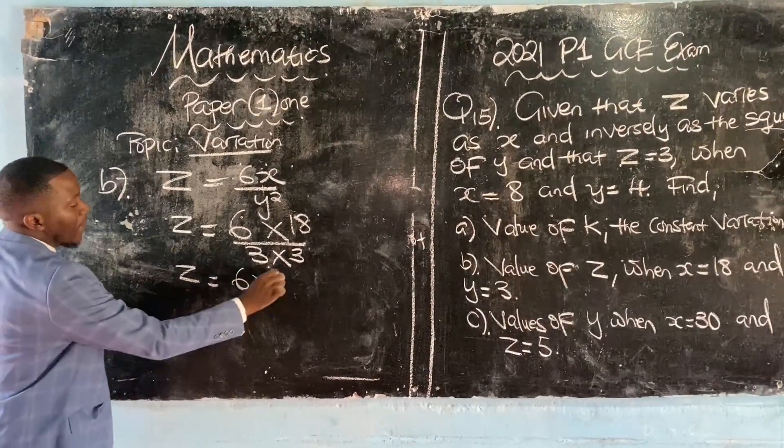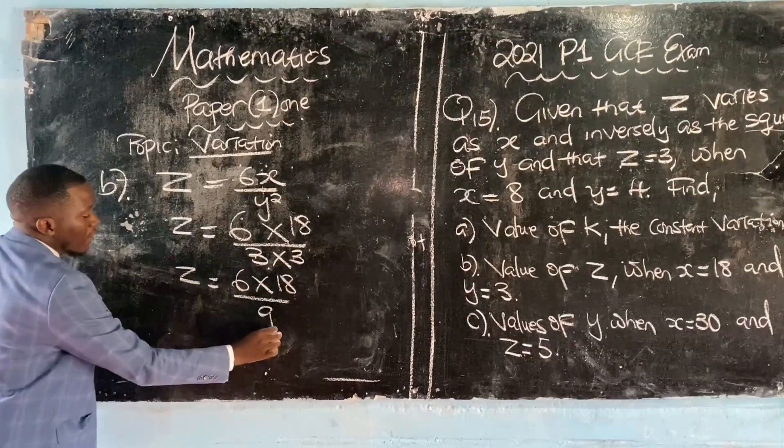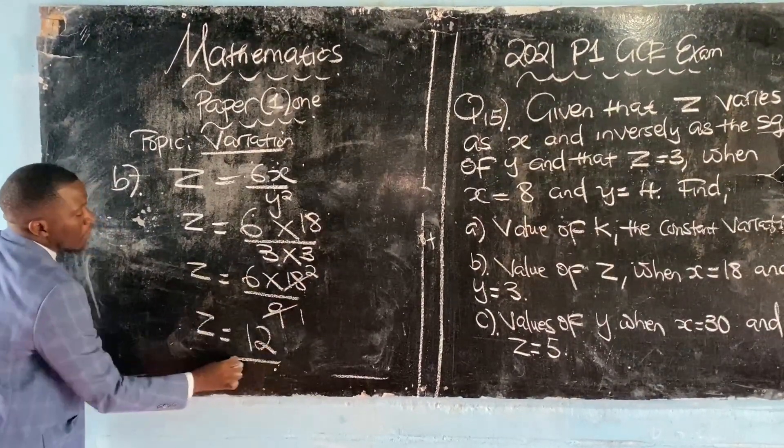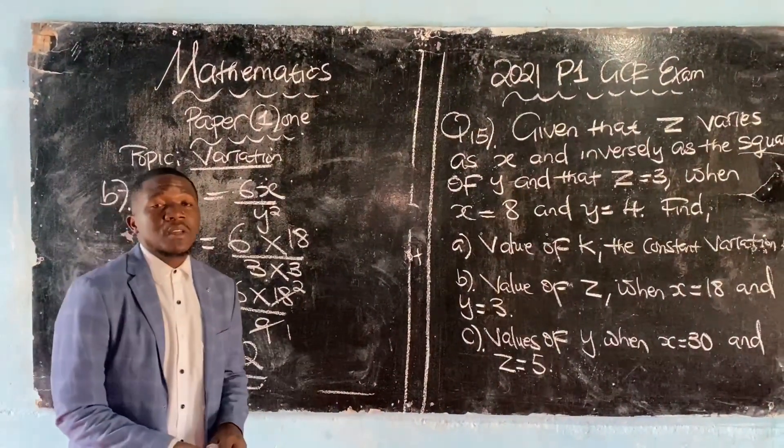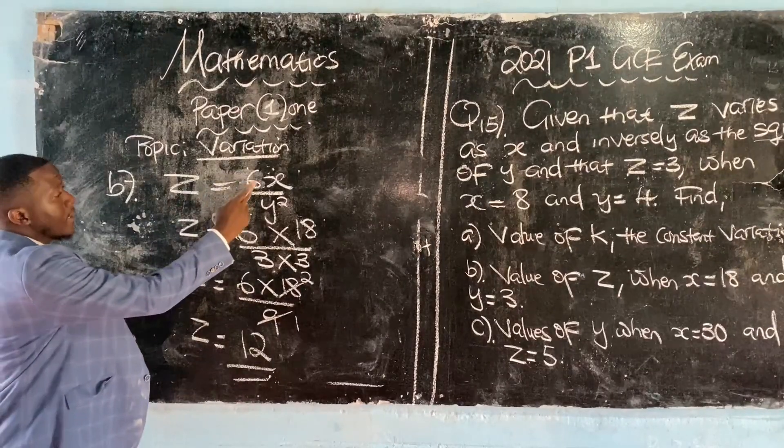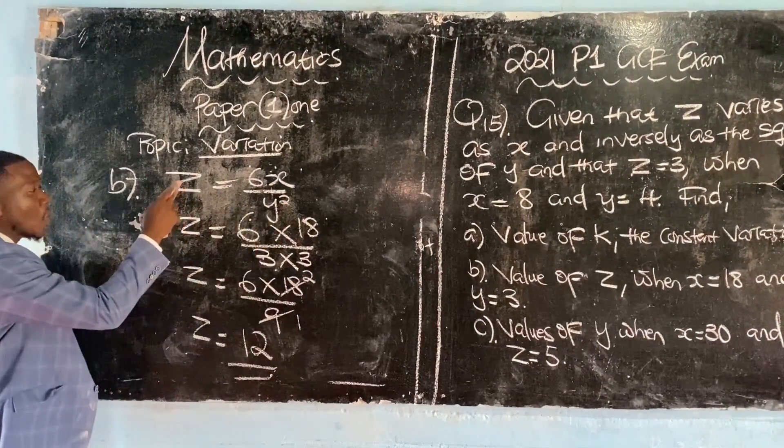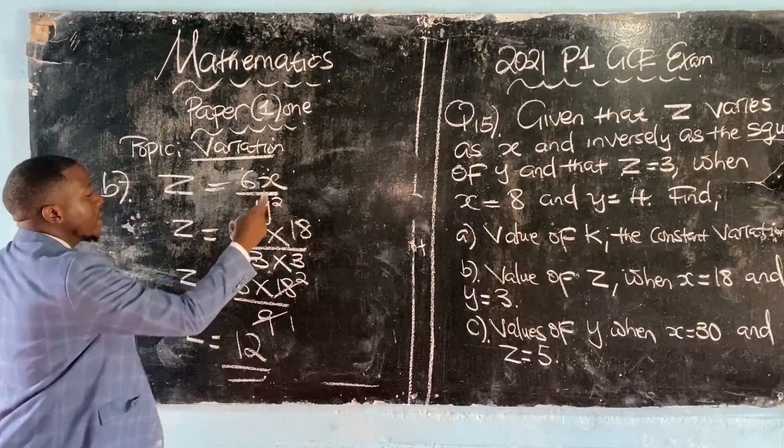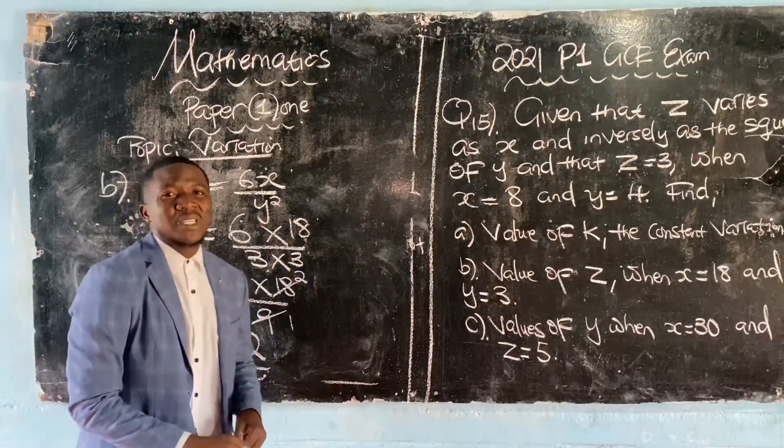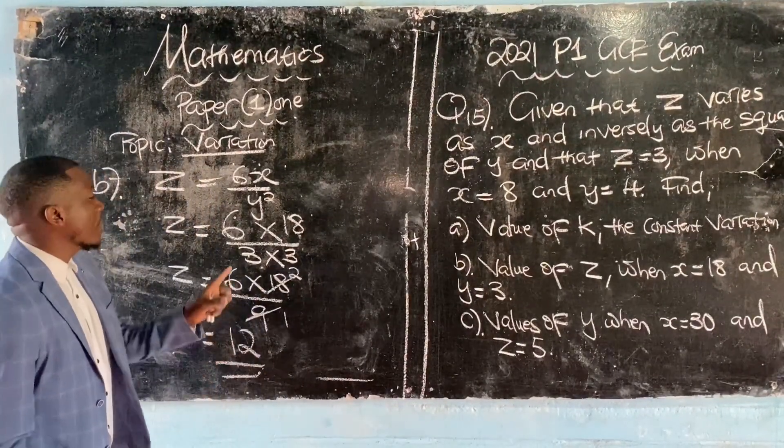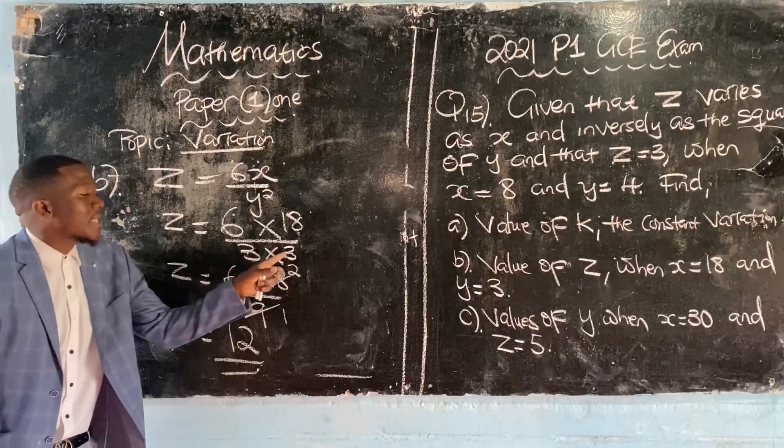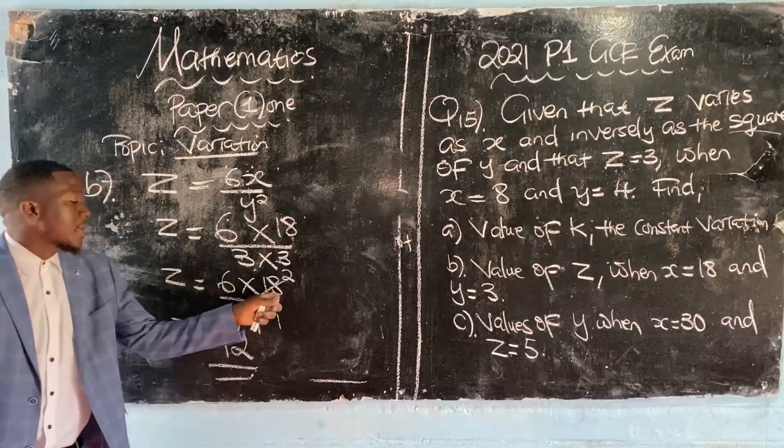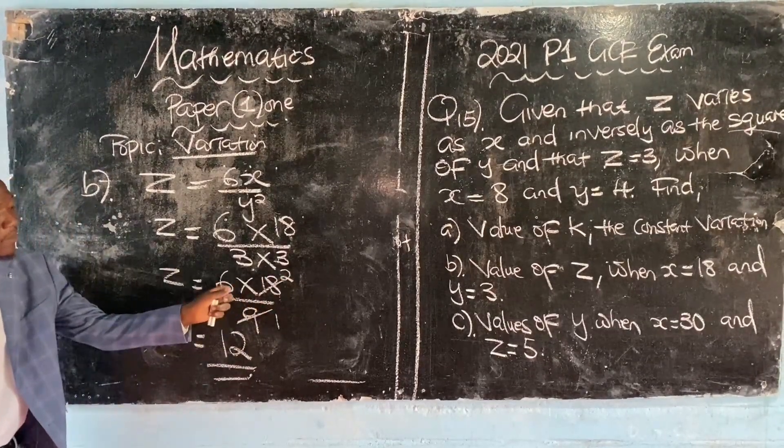z equals 6 multiplied by 18 over 9. This gives us z equals 12. We multiply on the denominator side: 9 into 18 is 2, multiplied by 6 gives us 12. We have found the value of z is 12.